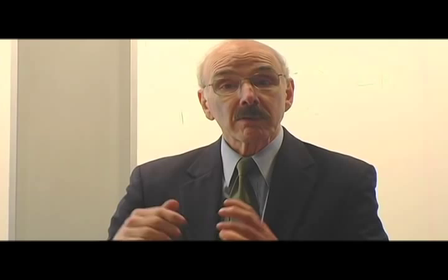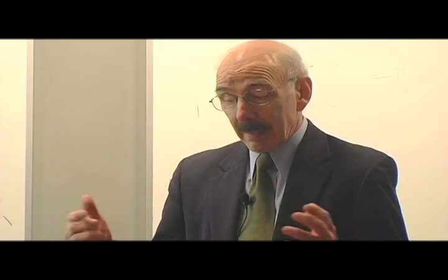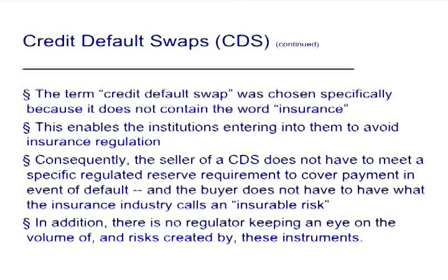As long as the counterparties survive, this money goes right to the bottom line as an insurance premium. And that's exactly what AIG did. AIG was a triple-A rated insurance company, so unlike most counterparties, did not have to post any collateral, and they made great profits selling credit default swaps as long as the financial markets didn't melt down. Now this term was chosen specifically because it doesn't include the word 'insurance,' enabling the institutions who wrote them to avoid insurance regulation. These were important and influential financial institutions, so they got away with it.